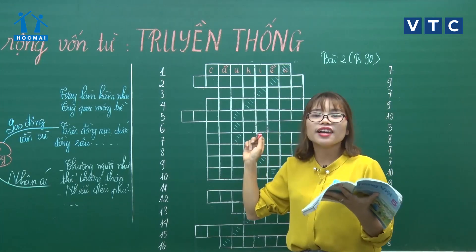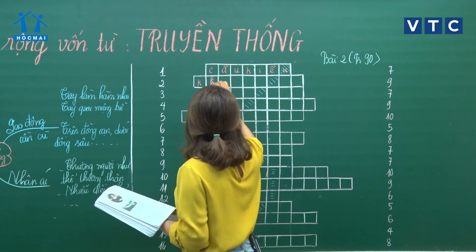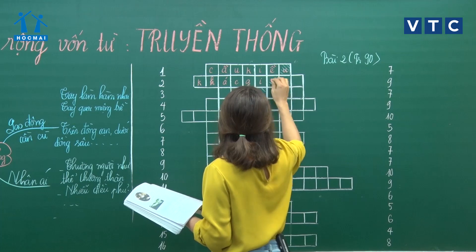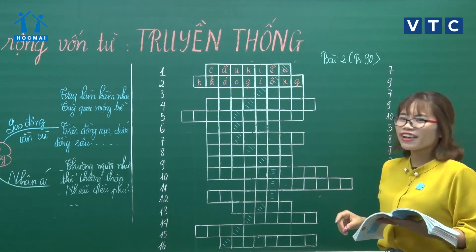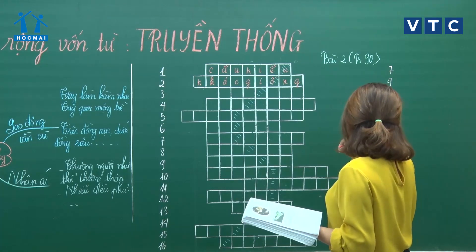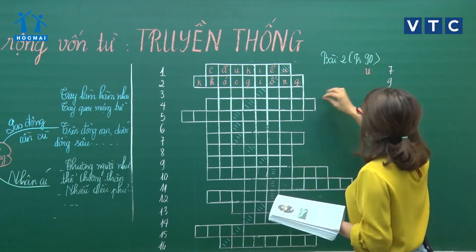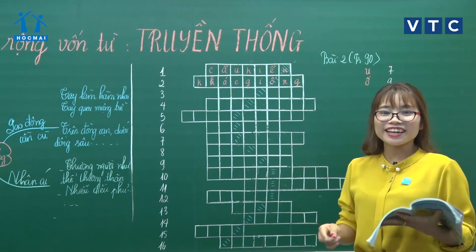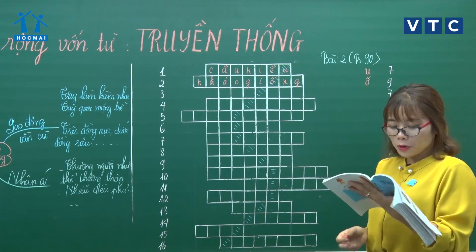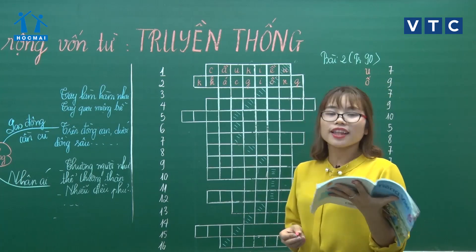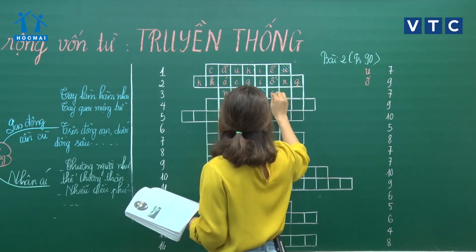Câu thứ 2: 'Bầu ơi thương lấy bí cùng, tuy rằng khác giống nhưng chung một giàn' - đáp án là 'khác giống.' Ô chữ đầu tiên tìm được là chữ Ú, ô chữ thứ 2 là chữ Ô. Câu số 3: 'Núi cao bởi có đất bồi, núi chê đất thấp núi ngồi ở đâu' - đáp án là 'núi ngồi ở đâu.'